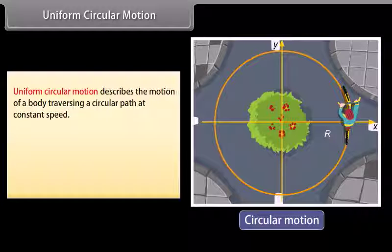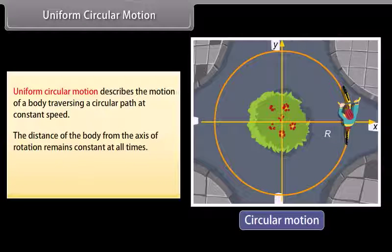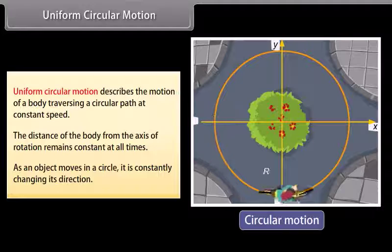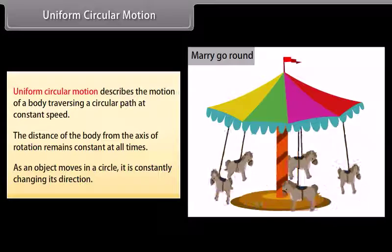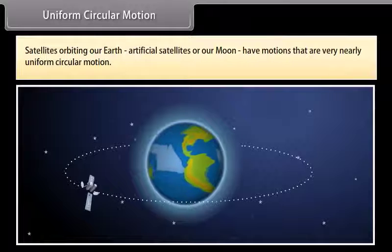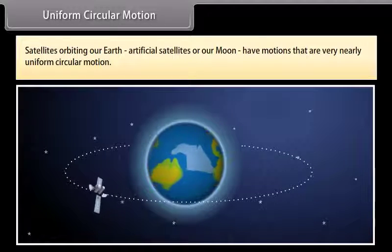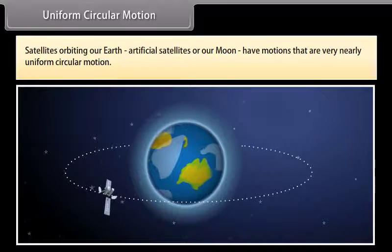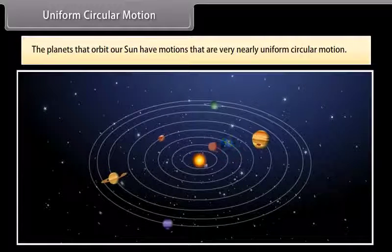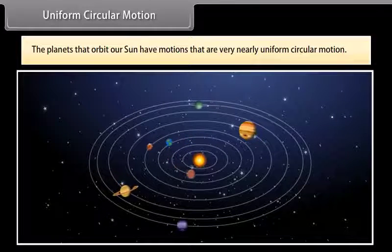Uniform circular motion describes the motion of a body traversing a circular path at a constant speed. The distance of the body from the axis of rotation remains constant at all times. As an object moves in a circle, it is constantly changing its direction. A merry-go-round is an example of uniform circular motion. Satellites orbiting Earth — artificial satellites and the moon — and the planets orbiting the sun all have motions that are very nearly uniform circular motion.